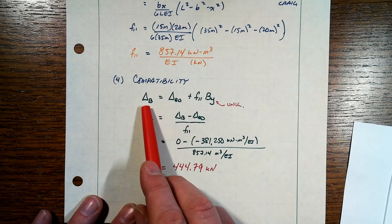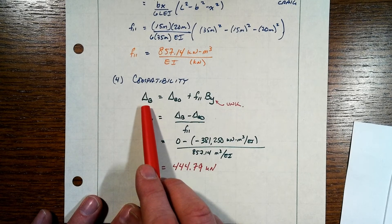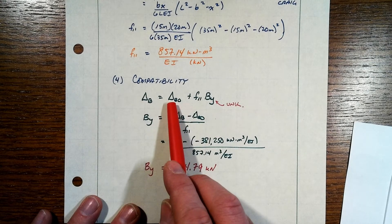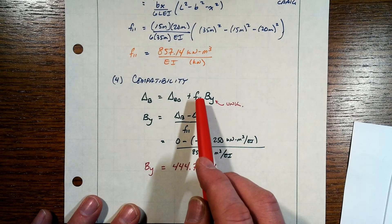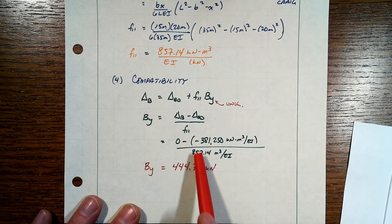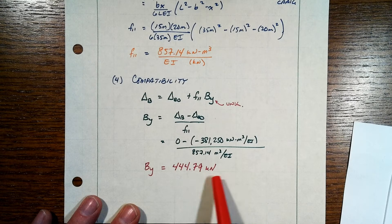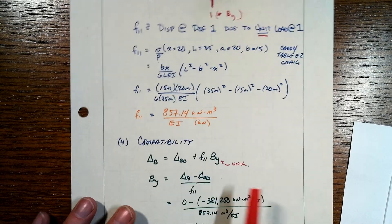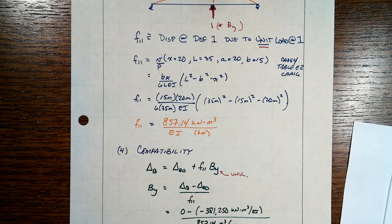That's our compatibility equation we're using to solve for our unknown reaction. In this case, delta_B is going to turn out to be 0. Delta_BO was downwards and comes over to the other side of the equation, so it's a minus times a minus. The flexibility coefficient was upwards, and the reaction was assigned positive upwards — positive over positive. We come up with BY equals 444.79 kilonewtons. The positive direction means it's consistent with what we set up, so it's actually acting upwards, which totally makes sense. Next step, we'll calculate all the other response quantities of interest.